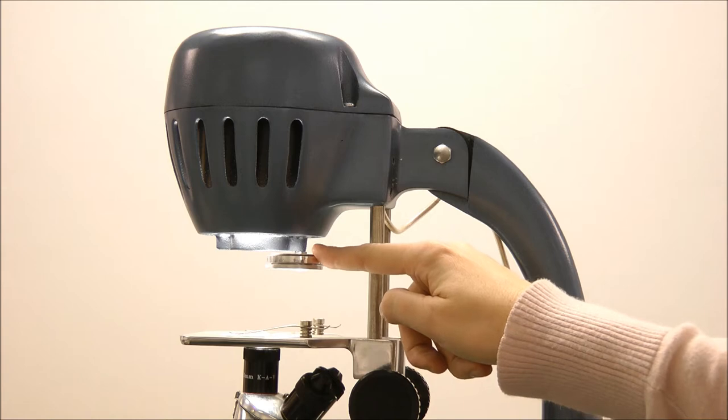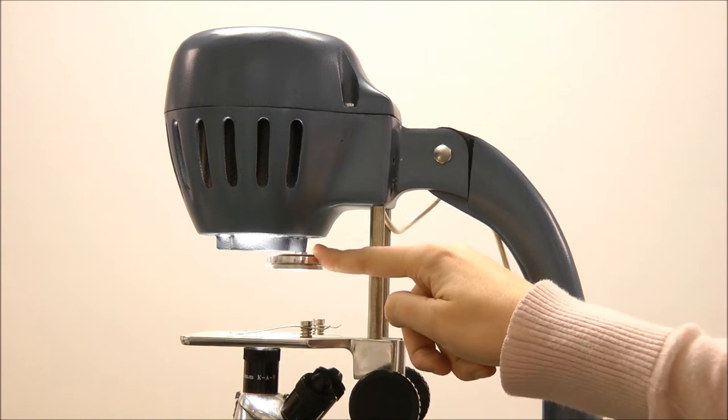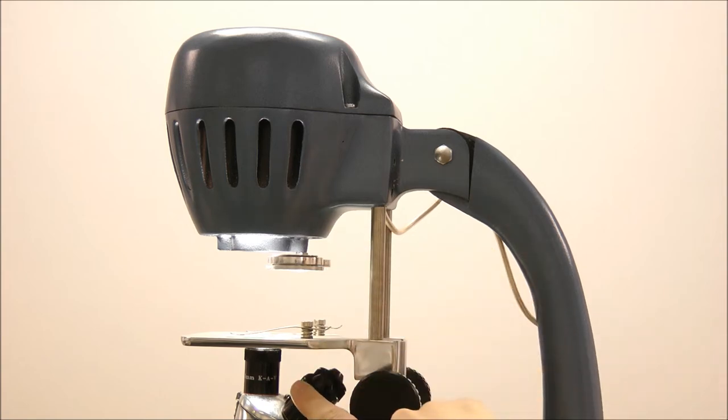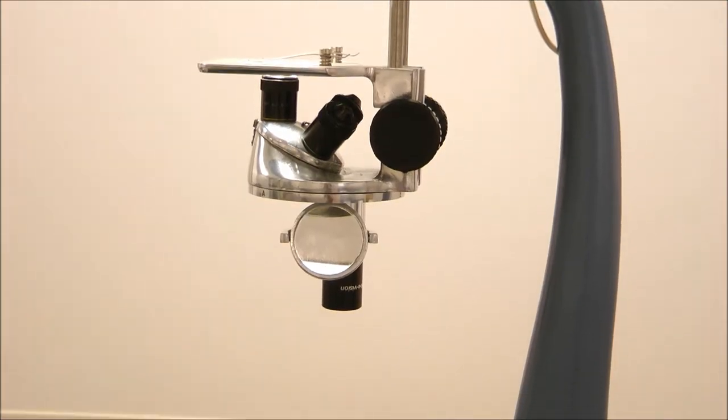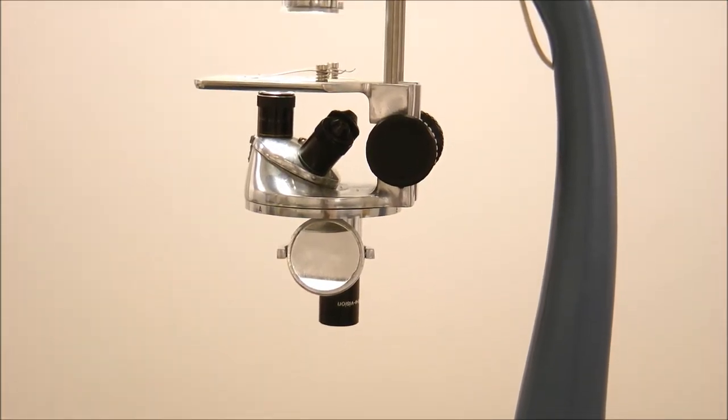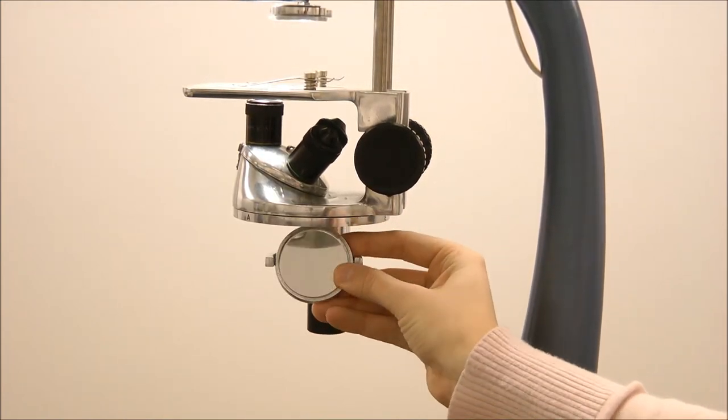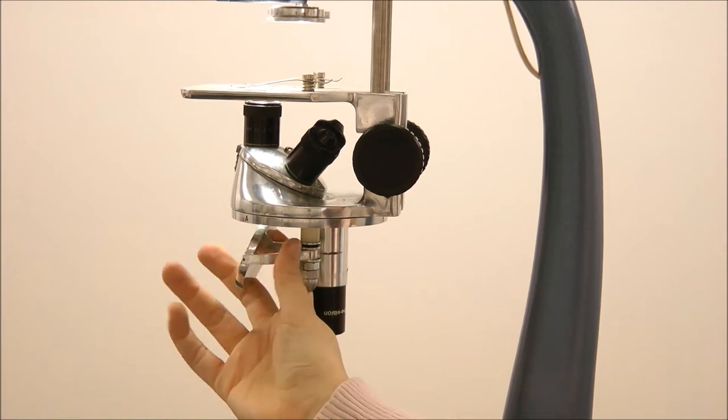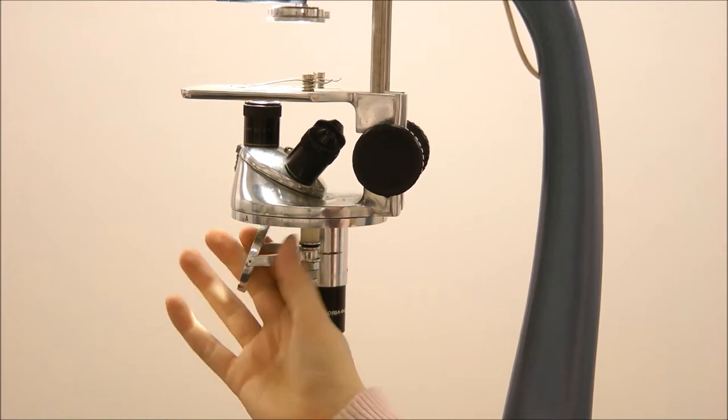You also have a revolving polarizer analyzer. You have the objective lenses. You have focusing knobs. And then finally a mirror that you can use or decide to not use by moving it out of the light source's path.